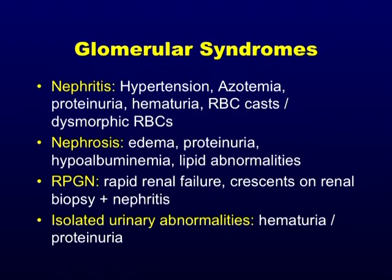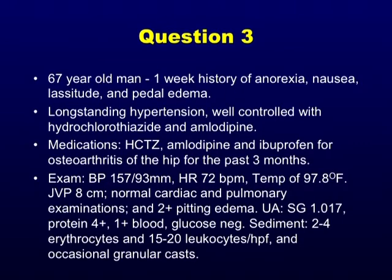Isolated urinary abnormalities is self-explanatory — it is hematuria and proteinuria. Question 3. A 67-year-old man with a one-week history of anorexia, nausea, lassitude, and pedal edema. Longstanding hypertension controlled. Medications include hydrochlorothiazide, amlodipine, and ibuprofen. Blood pressure 157 over 93, heart rate 72, afebrile, JVP 8.